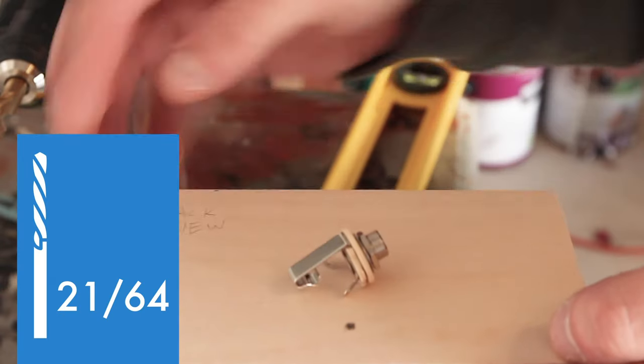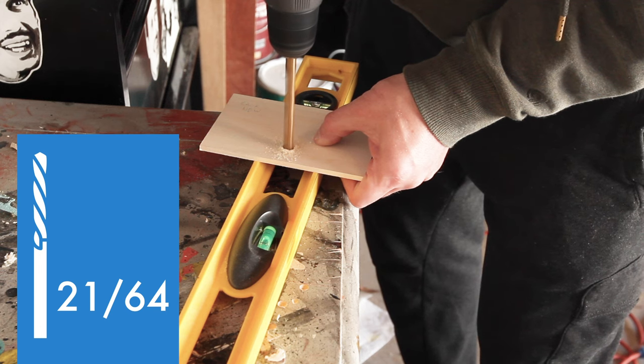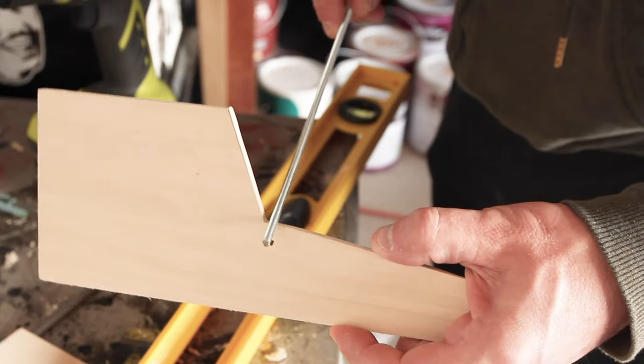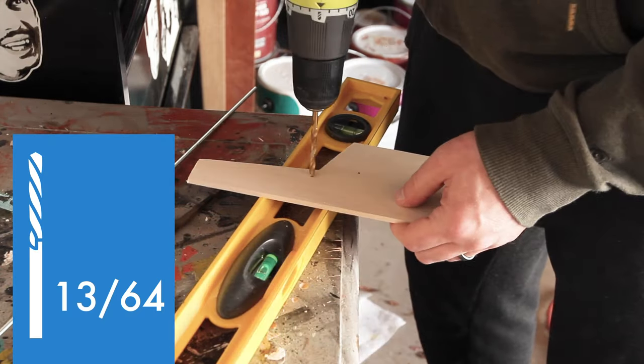The drill bit I used for the output jack on the back panel is 21/64ths. Now for the two holes that hold the support bar for the piano keys. This bit is 13/64ths inch.